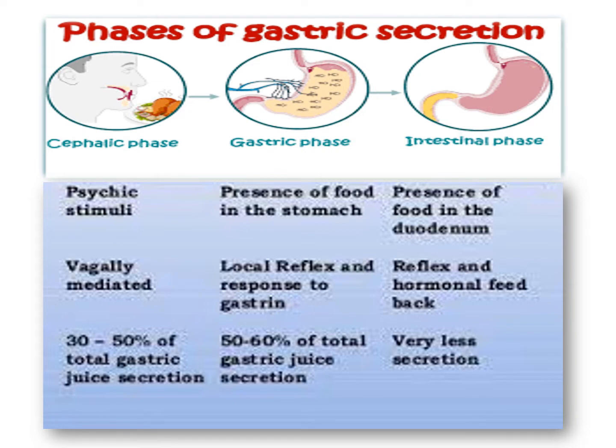We saw that the primary offensive factor playing a major role in the development of peptic ulcer disease is HCl production. There are three different phases of gastric secretion: the cephalic phase, the gastric phase, and the intestinal phase.